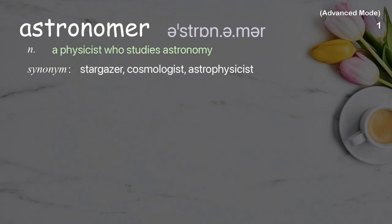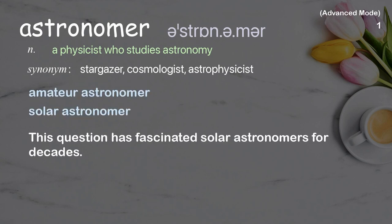Astronomer. A physicist who studies astronomy. Examples: amateur astronomer, solar astronomer. This question has fascinated solar astronomers for decades.